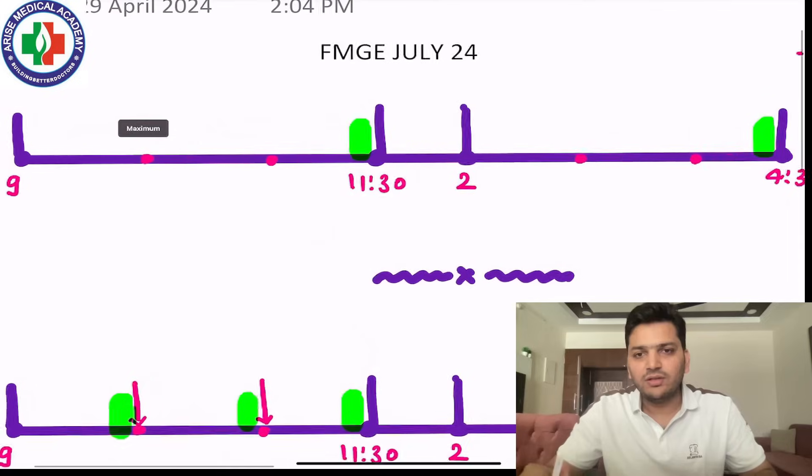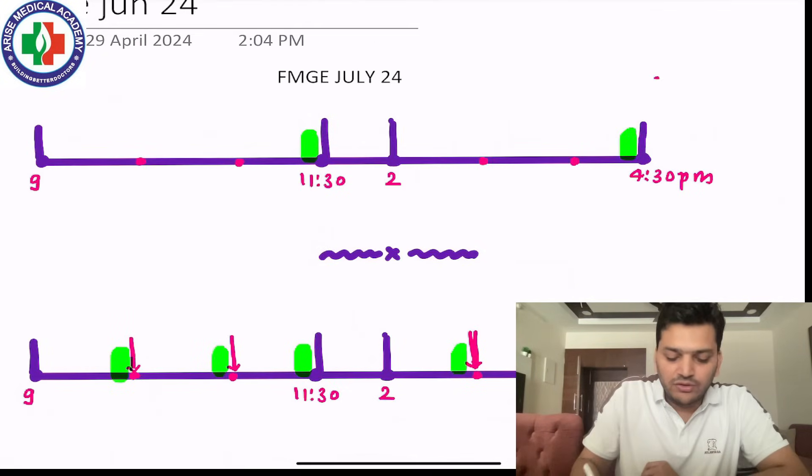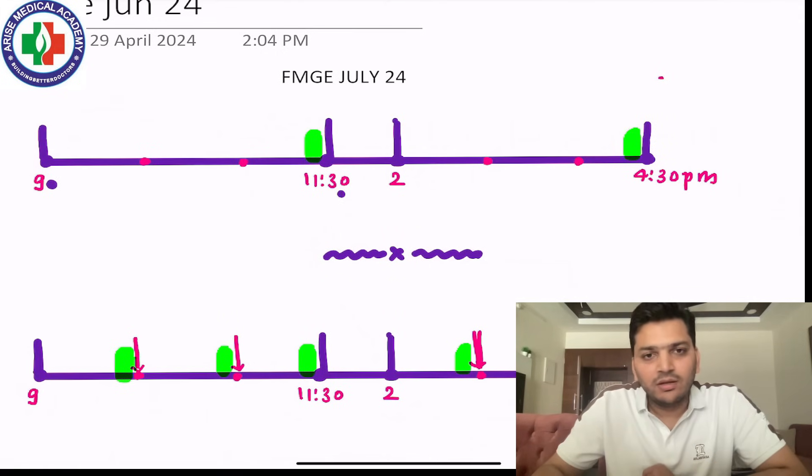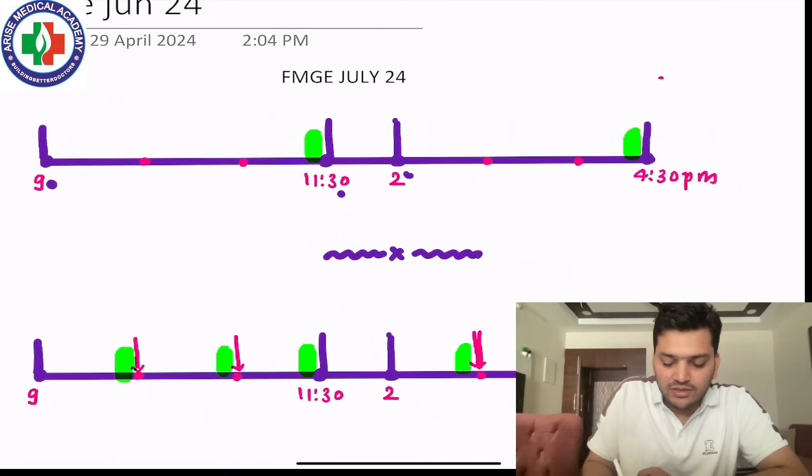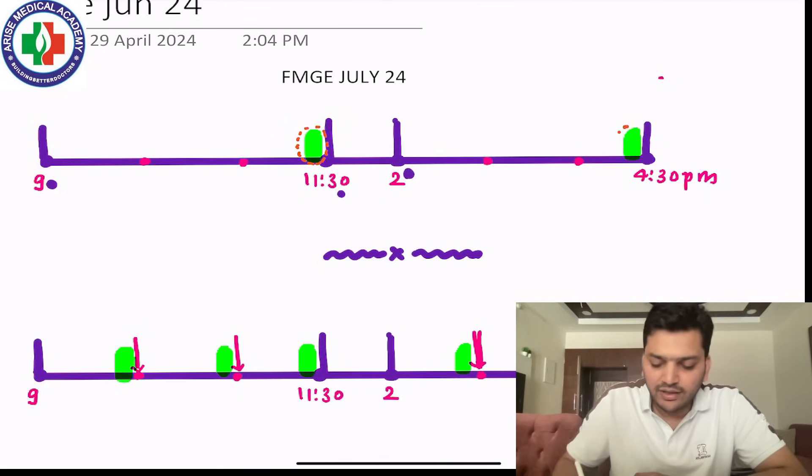Earlier what was happening was the exam was happening in two parts, the first and second part. The first part was starting from 9 a.m. and it was completing at 11:30 a.m. Then there was a break and then the second half starting at 2 p.m. and completing at 4:30 p.m. Now, what was happening was many times there are some questions which are little lengthy or maybe time taking.